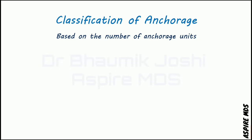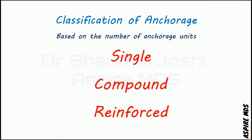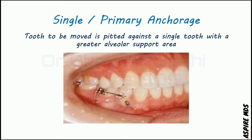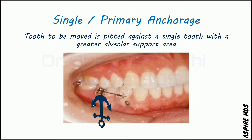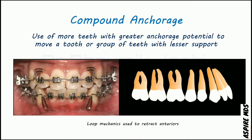Another way to classify anchorage is based on the number of anchorage units used — single, compound, and reinforced anchorage. Single anchorage, also known as primary anchorage, is where the tooth to be moved is placed against a single tooth, but that single anchor tooth has greater alveolar support compared to the tooth being moved. For example, the mandibular molar is used as anchor to cause movement of the mandibular premolar.